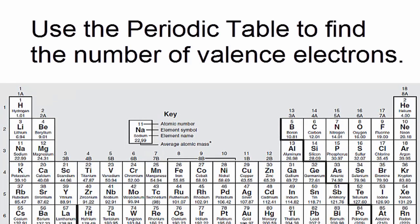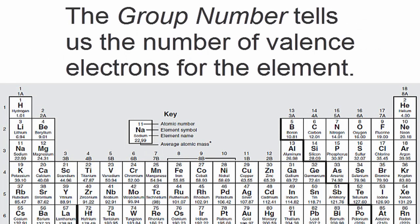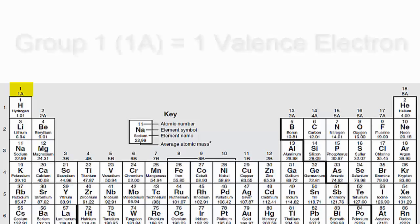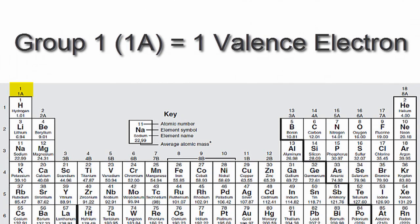We can find the number of valence electrons using the periodic table. The group number tells us the number of valence electrons for the element. For example, hydrogen has one valence electron because it's in group 1, sometimes called 1A.